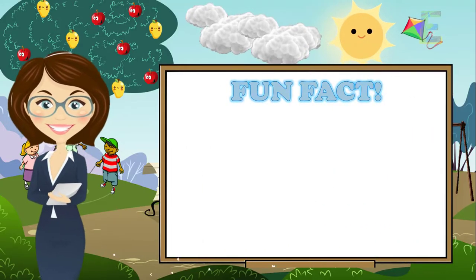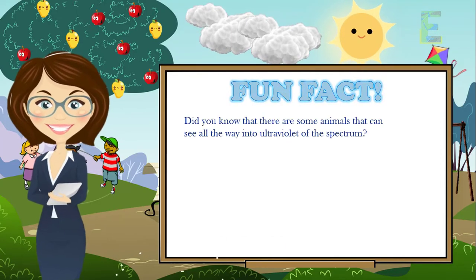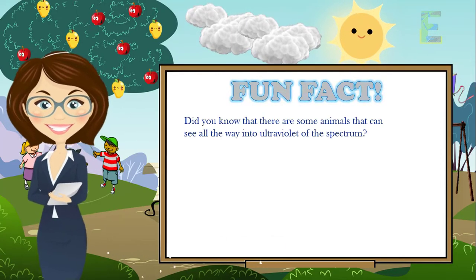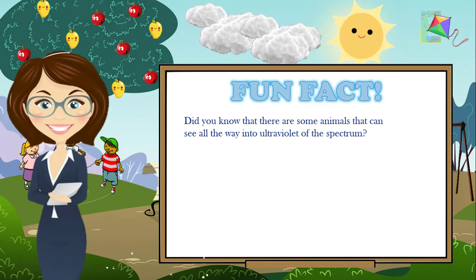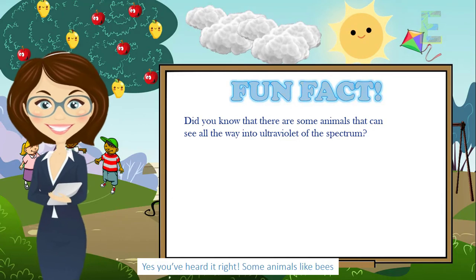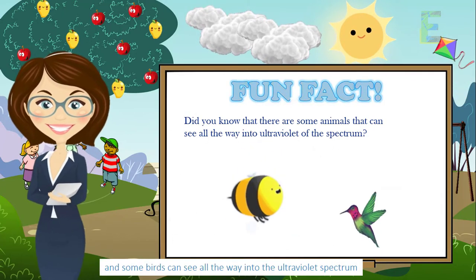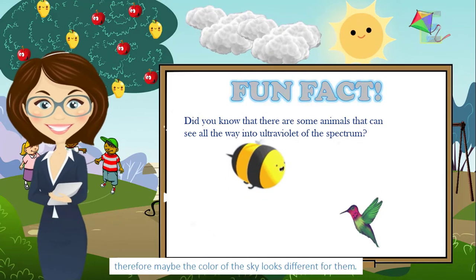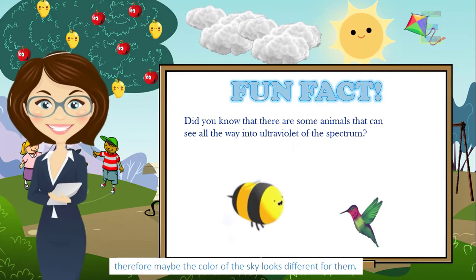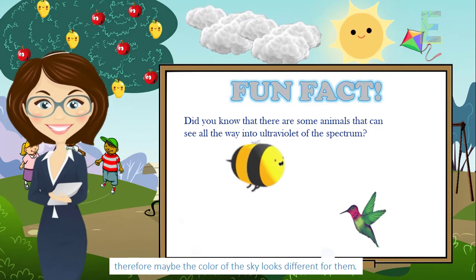Fun fact guys! Did you know that there are some animals that can see all the way into ultraviolet of the spectrum? Yes, you've heard it right. Some animals like bees and some birds can see all the way into the ultraviolet spectrum. Therefore, maybe the color of the sky looks different for them.